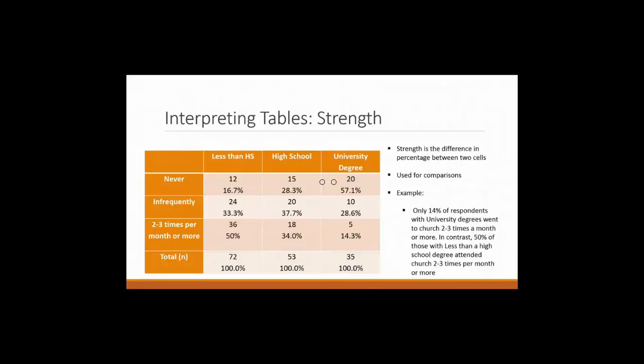One word of caution is that it's never okay to compare between rows. I would never compare the never row with the infrequently row. That's because we did not calculate row percentages. In your textbook, it does talk about calculating row and column percentages, but for our purposes, we're only going to calculate column percentages. Your textbook also talks about the fact that you can place your independent variable in the columns or in the rows, but for our purposes, we're only going to place our independent variable in the columns.